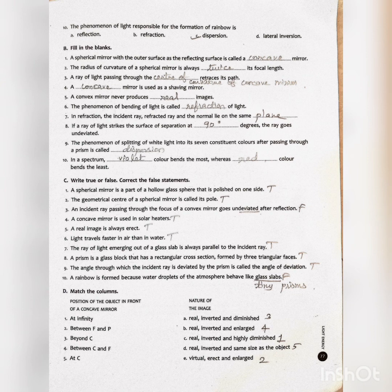Ninth one: The phenomenon of splitting of white light into its seven constituent colors after passing through a prism is called dash. Answer is dispersion.